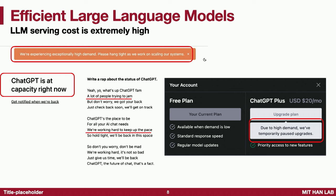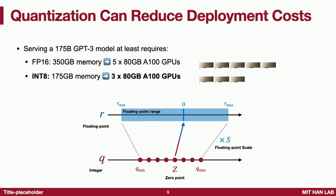In 2023, it's a golden age for generative AI. We not only want to classify things but also generate new content. That is posing new challenges for efficient AI computing, which will be the focus of today's talk. The LLM serving cost is extremely high — ChatGPT is usually at capacity, preventing upgrades. We want to reduce the serving cost to release those constraints.